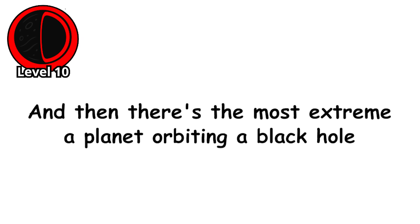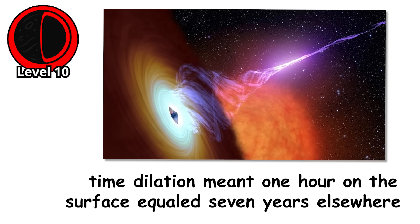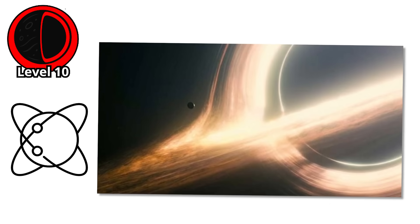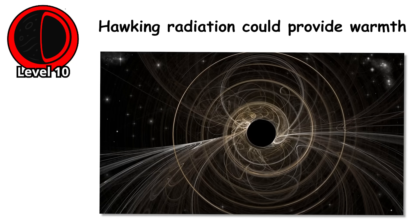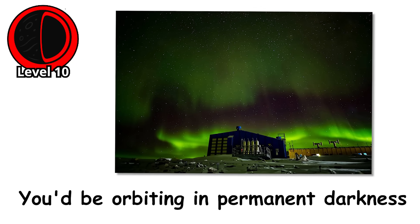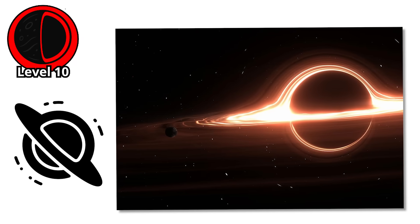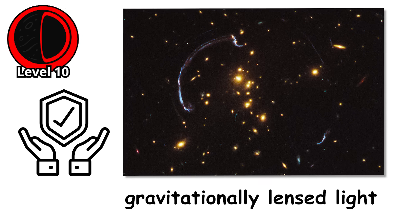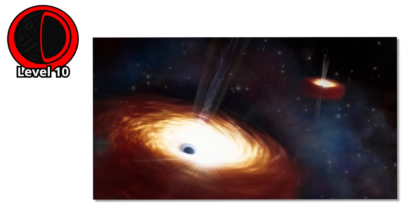In Interstellar, they depicted Miller's planet orbiting close to a supermassive black hole, where time dilation meant one hour on the surface equaled seven years elsewhere. While the movie took creative liberties, the physics isn't entirely impossible. A planet orbiting in the habitable zone of a black hole would need to be far enough away to avoid being torn apart by tidal forces, but close enough that Hawking radiation could provide warmth. You'd be orbiting in permanent darkness - no sun, no stars visible beyond the distortion of space-time around the black hole. Any light would come from the accretion disk, superheated matter spiraling into the black hole, creating a glow like a demonic halo. The sky would be a twisted funhouse mirror of gravitationally lensed light. Would life be possible? Maybe. But it would be life that evolved in the shadow of a cosmic monster, clinging to existence in one of the most extreme environments the universe can create.